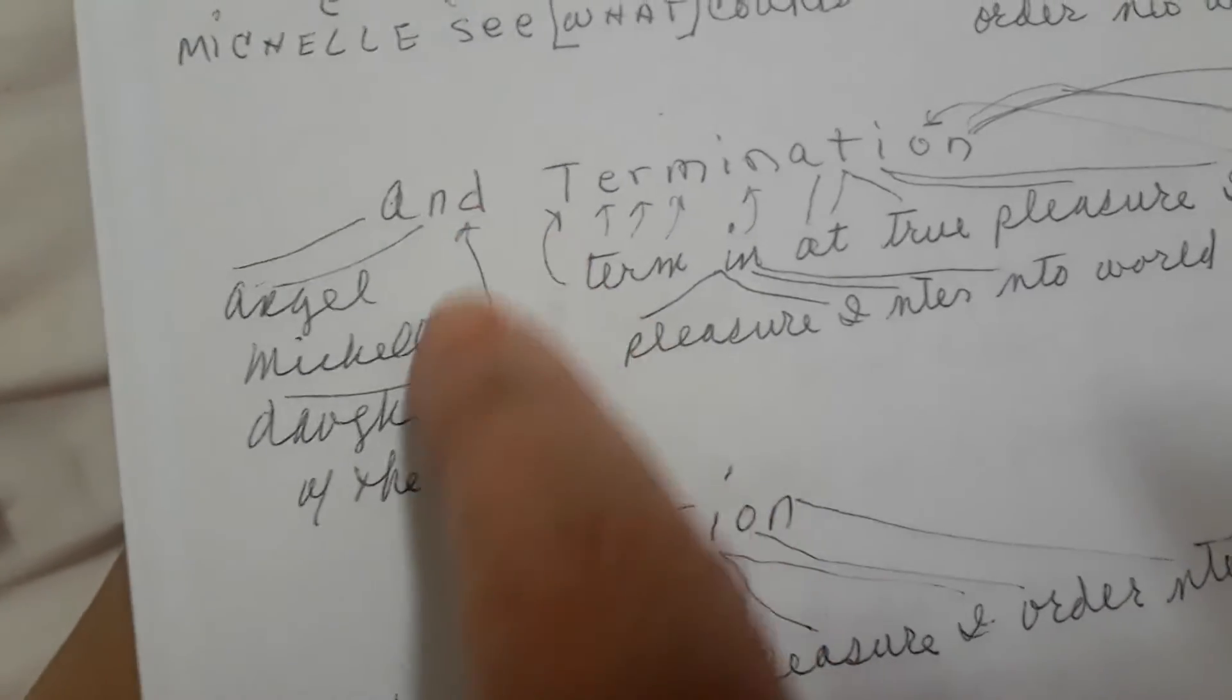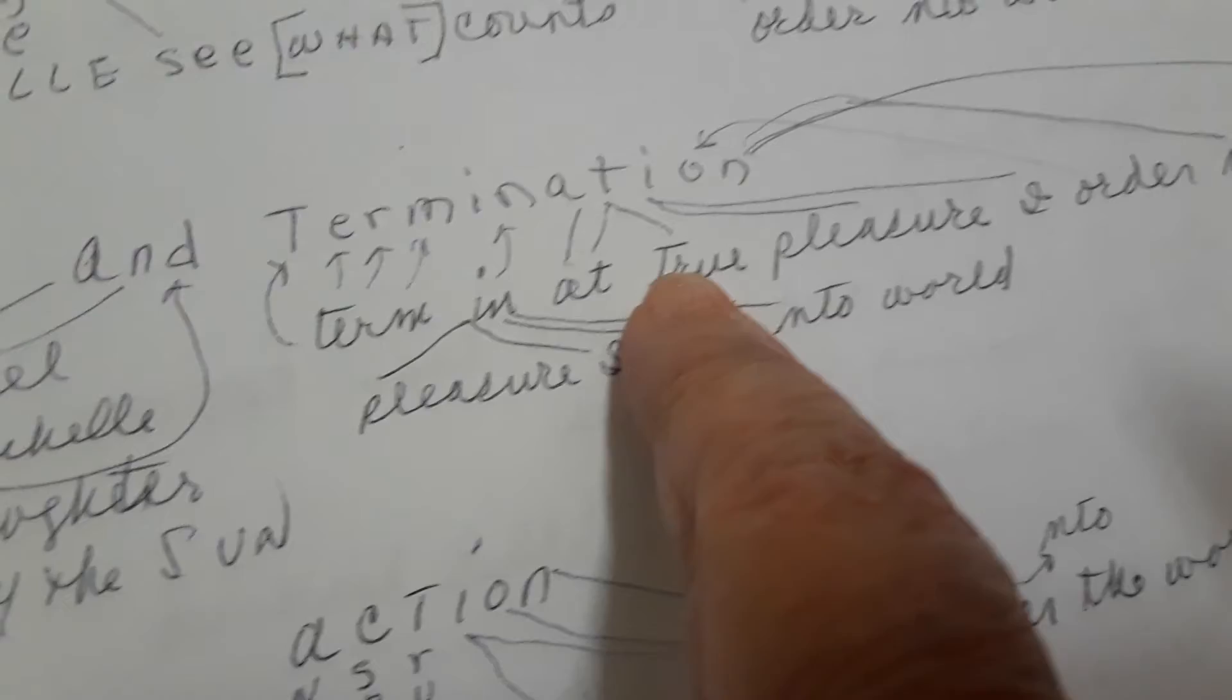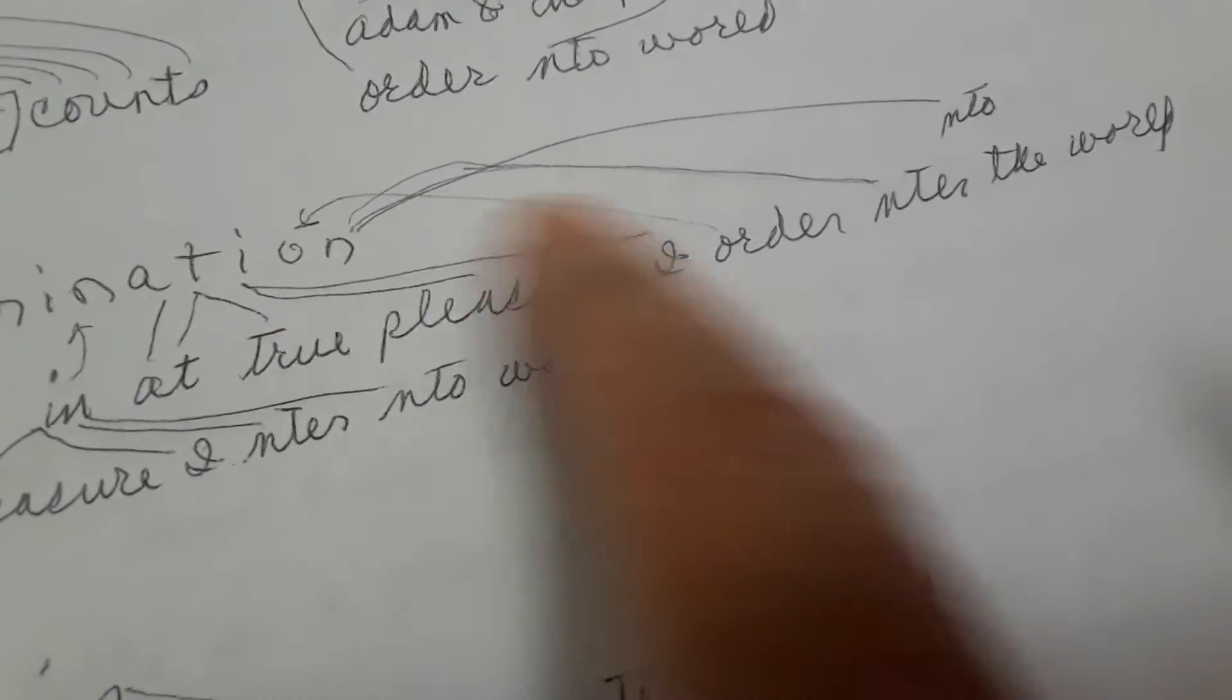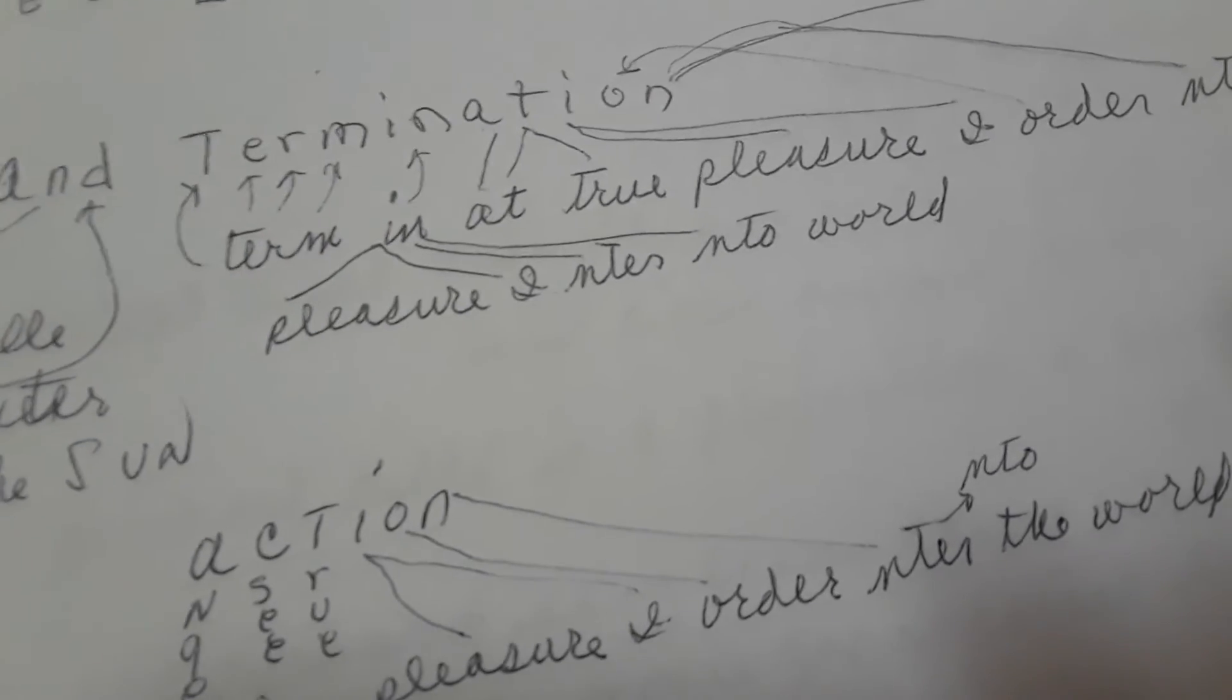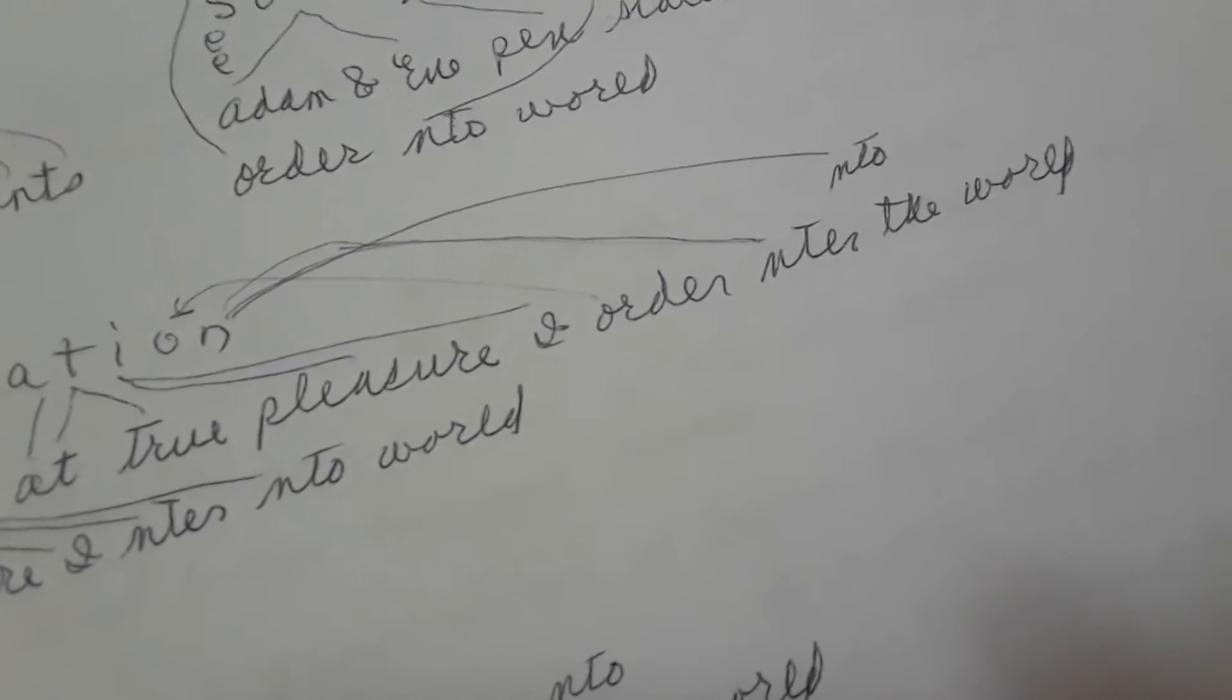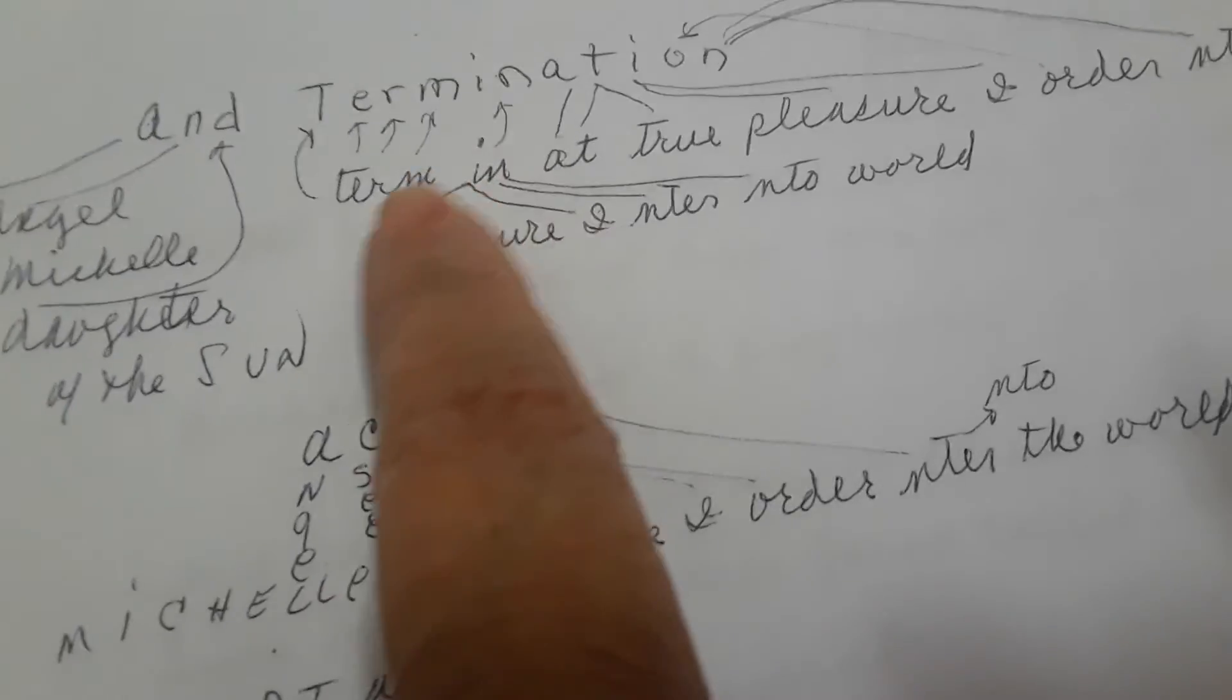And termination, the YouTube agreement says. A-N for angel Michelle, D for daughter of the sun, T for term, I-N for in, at true, I for pleasure, O and I for I, O for order, N for enter into. Term in pleasure, I enter into the world at true pleasure. I order enter into the world. Okay, I order true pleasure the world. And that's my term.